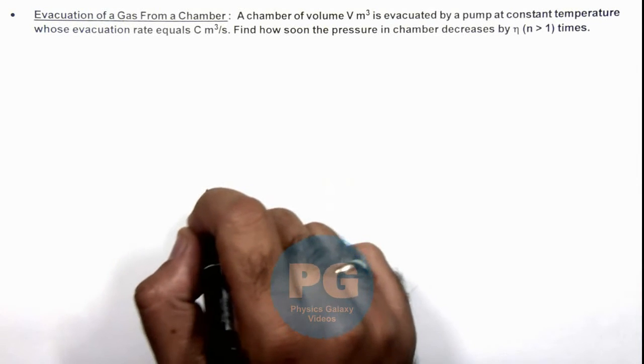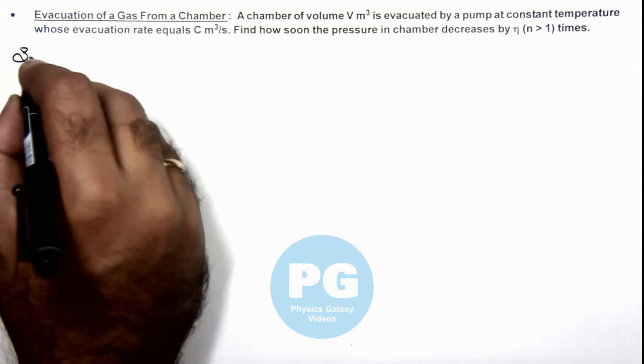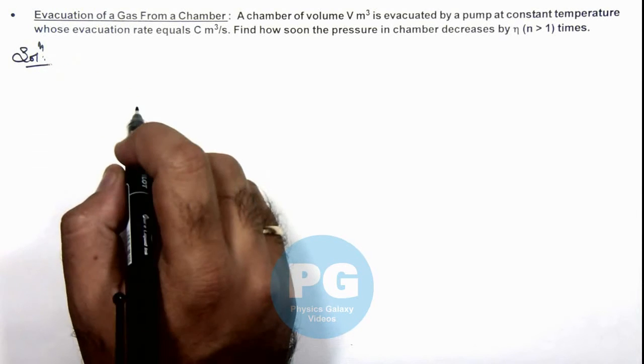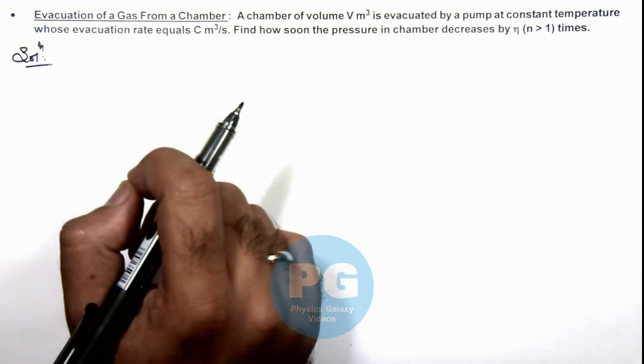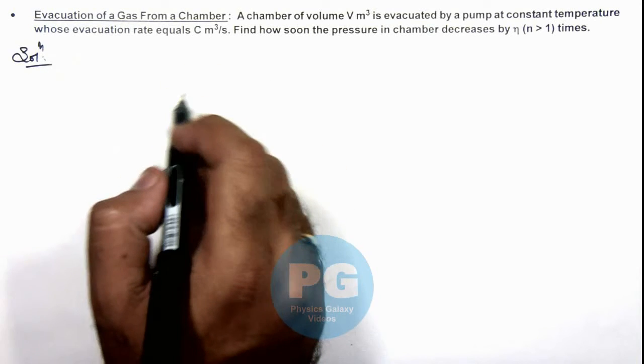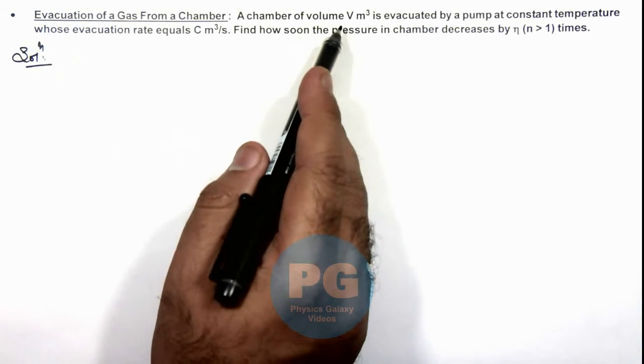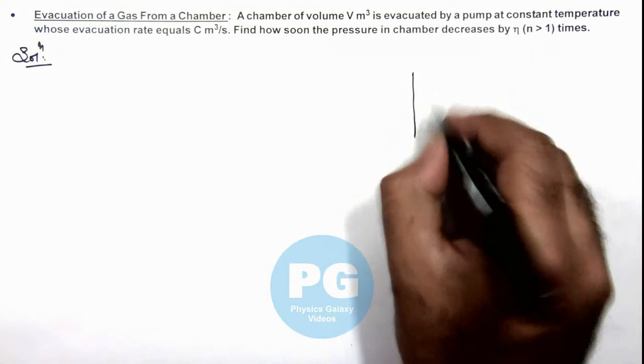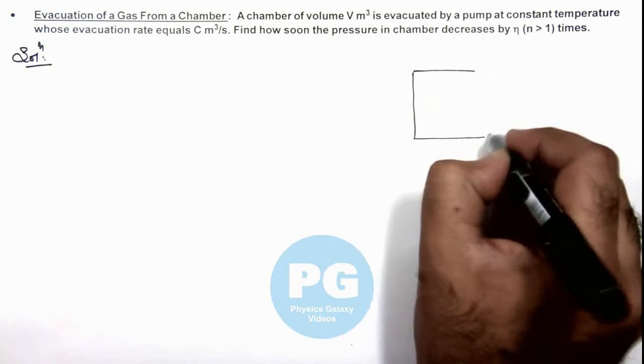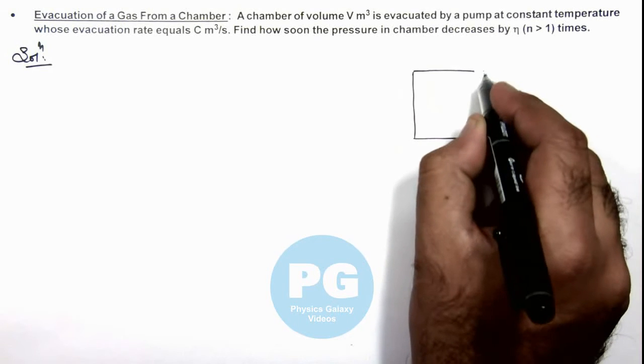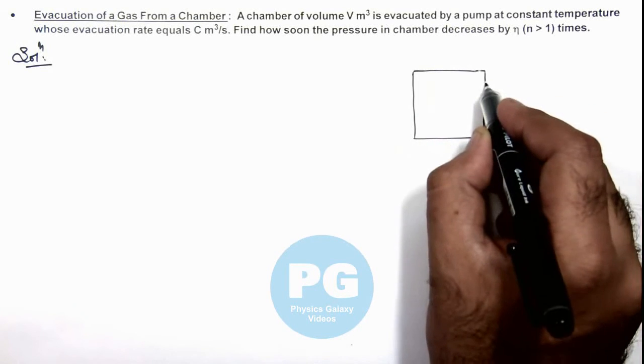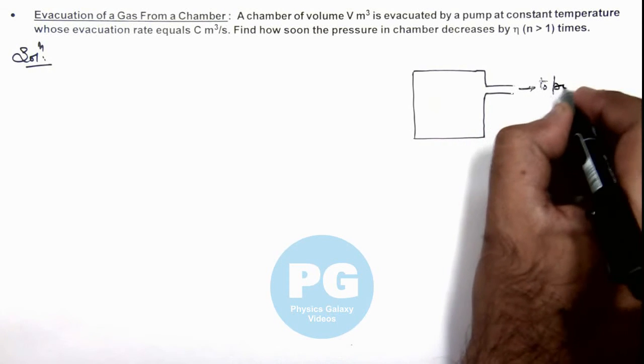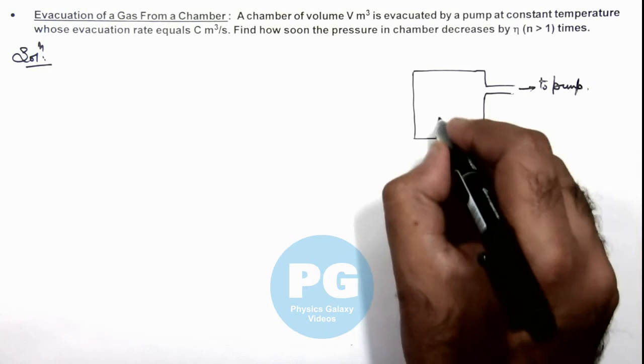In this situation, we can directly write: if we talk about an elemental time dt in which the volume of gas in the chamber increases from V to V + dV, then here we can see if we draw the picture of a chamber which is connected to a vacuum pump. This is connected to the pump and its volume is V.